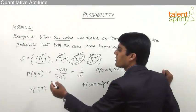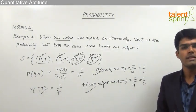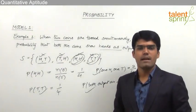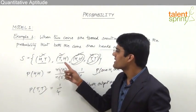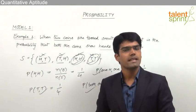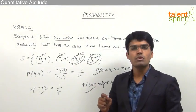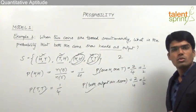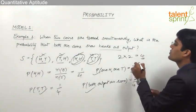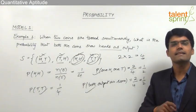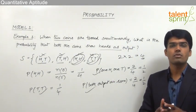We simply decide the sample space and take only those outcomes in favor of the given event divided by total outcomes. One important point: how do we calculate the total number of outcomes? When we toss one coin there are two outcomes. For two coins, there are 2² = 4 outcomes, and for three coins there would be 2³ = 8 outcomes. This is how we determine the total number of outcomes for a given event.